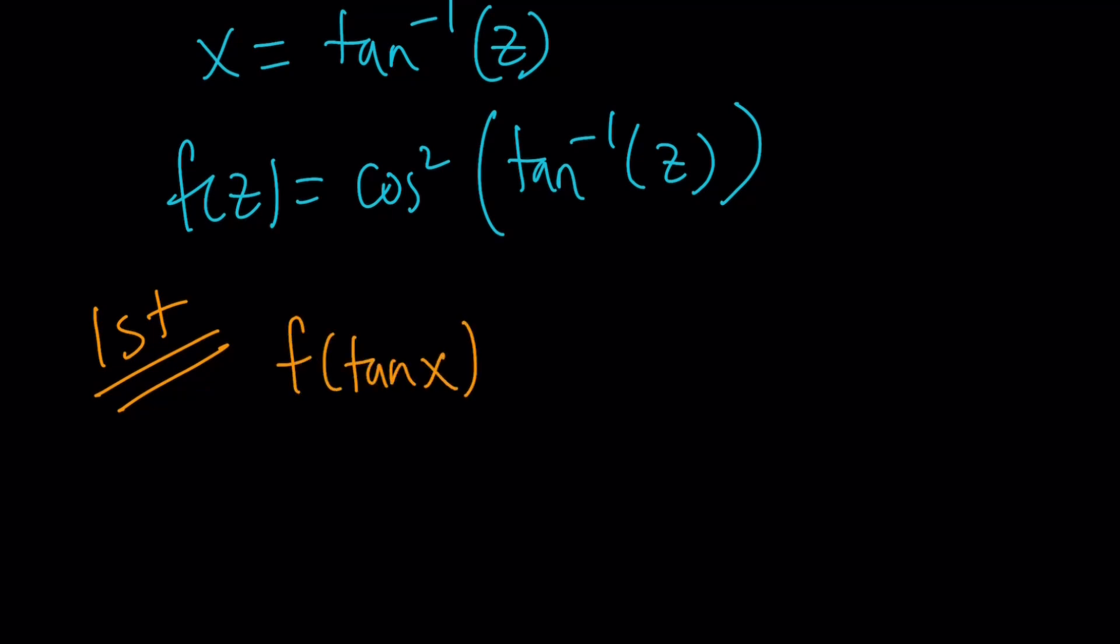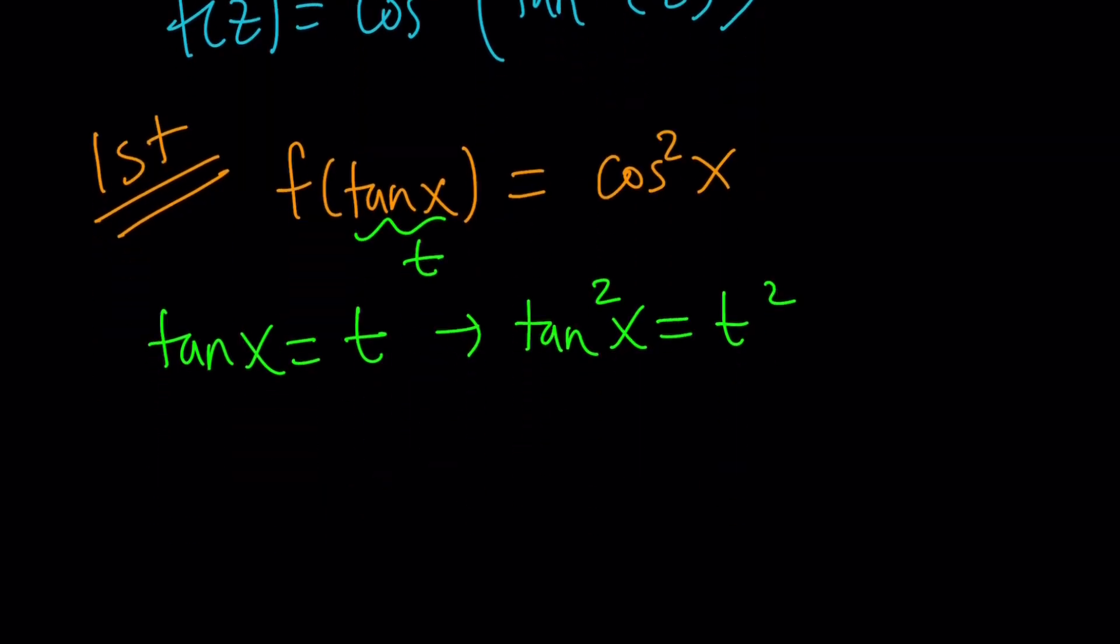So, start with f of tangent x equals cosine squared x. Again, we're going to call tangent x something. Let's call it t. But this time, we're going to do a little bit more. If tangent x equals t, then tangent squared x becomes t squared. And why did I square it? Because if I add 1 to both sides, I get 1 plus tangent squared, which is the same thing as secant squared.